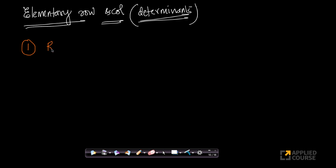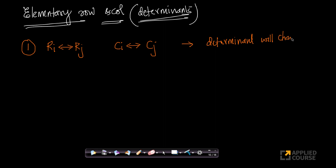The first property says that if you swap row i and row j, or if you swap column i with column j — swap basically means you interchange — then the determinant of the resultant matrix will change in sign. The value itself will not change, but the sign of the determinant will change by making row-swapping or column-swapping operations.